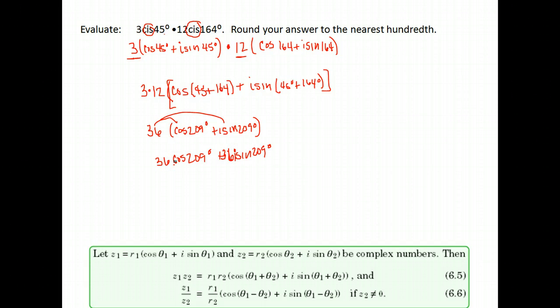So here I have 36 times the cosine of 209, which is negative 31.49 if I round to the nearest hundredth. That's two places after my decimal.